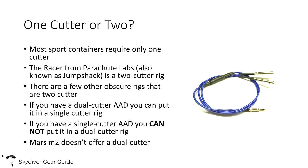Most AADs have a single cutter. The Mars M2 does not have a two-cutter version. Some rigs require two cutters — some tandem rigs and the Racer from Jump Shack, now called Parachute Labs, are two-cutter rigs. For Vigil and Cypress, you can get either one cutter or two cutters. If you have a two-cutter AAD, you can put it into a single cutter rig with no problem. If you have a two-cutter rig and a single cutter AAD, you need to get the two-cutter cutter and may pay a little extra.